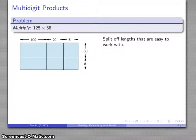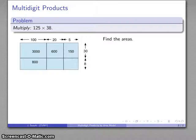And again, the advantage here is that the areas I have to compute are very easy to calculate. This is 100 by 30, 20 by 30, 5 by 30, and so on. So I'll compute those areas. And I have all those areas of all those rectangles.